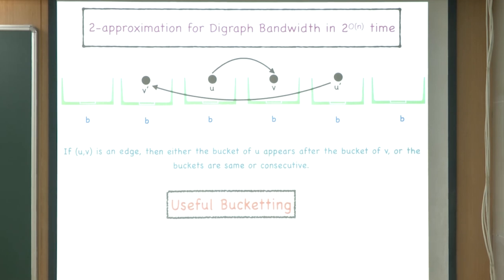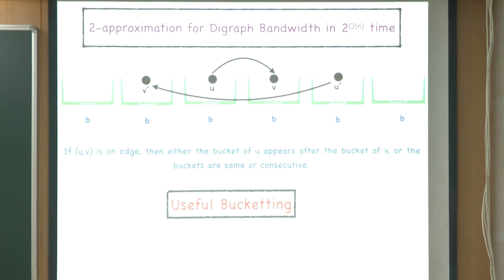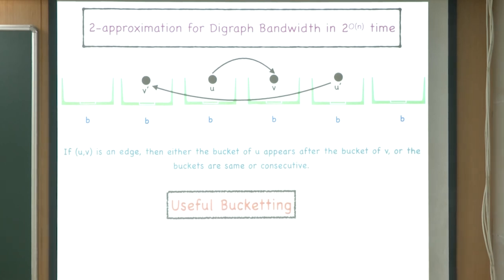If we have a useful bucketing with bucket size b, we order vertices within each bucket arbitrarily, then concatenate buckets in order. Any forward arc was between two consecutive buckets of size b each, so its stretch is at most 2b. This gives a 2-approximation. The challenge is finding such a useful bucketing efficiently.